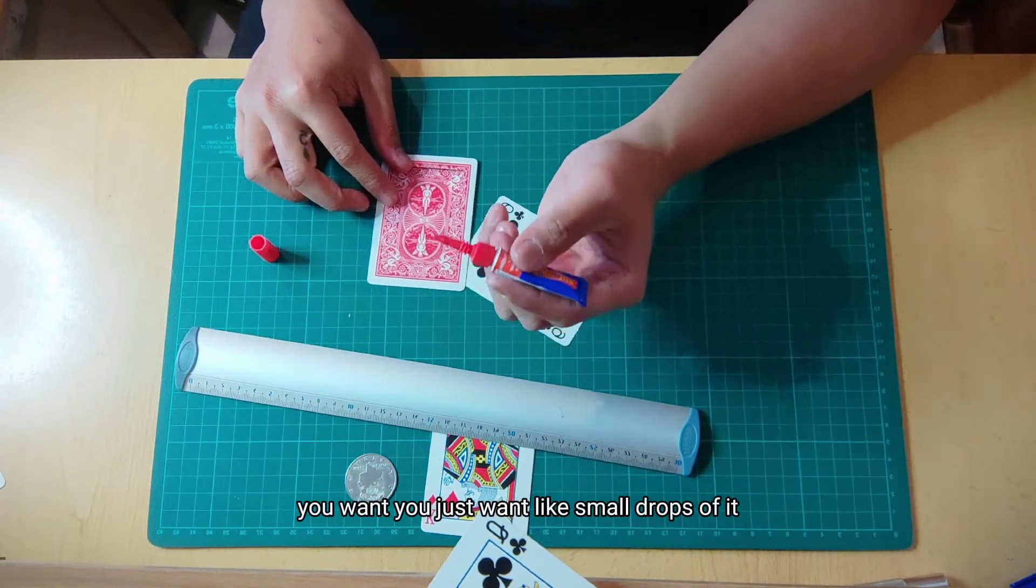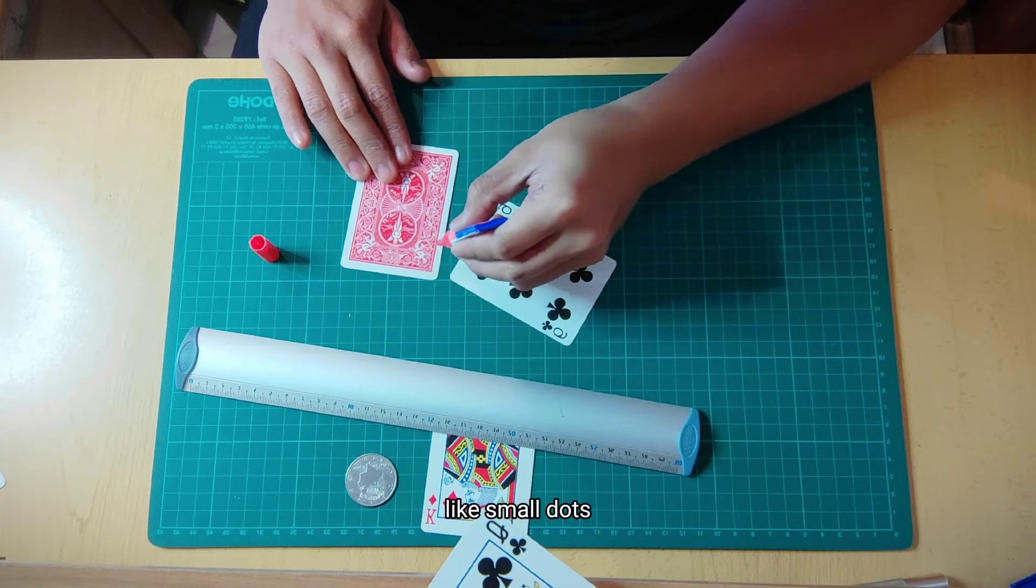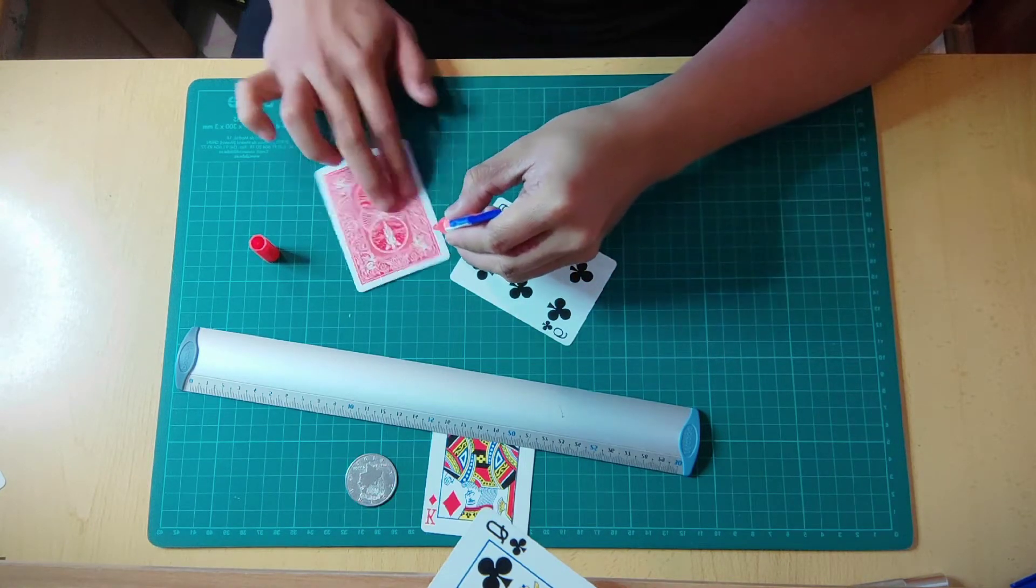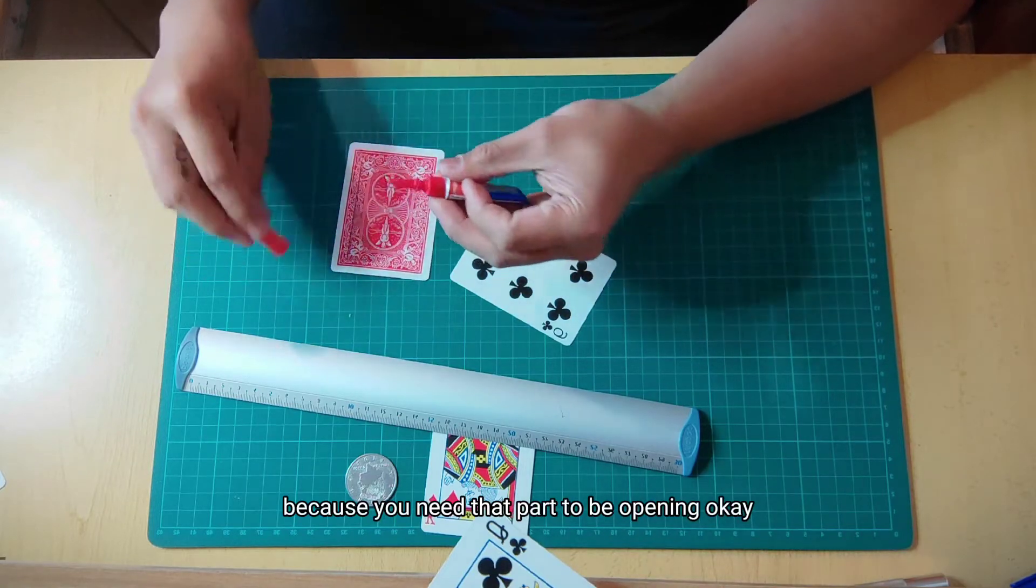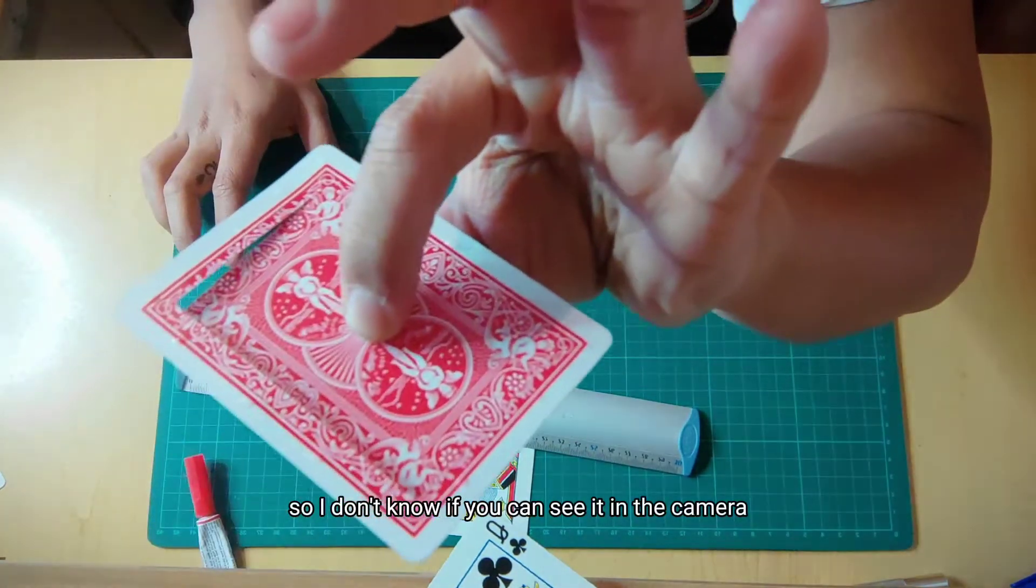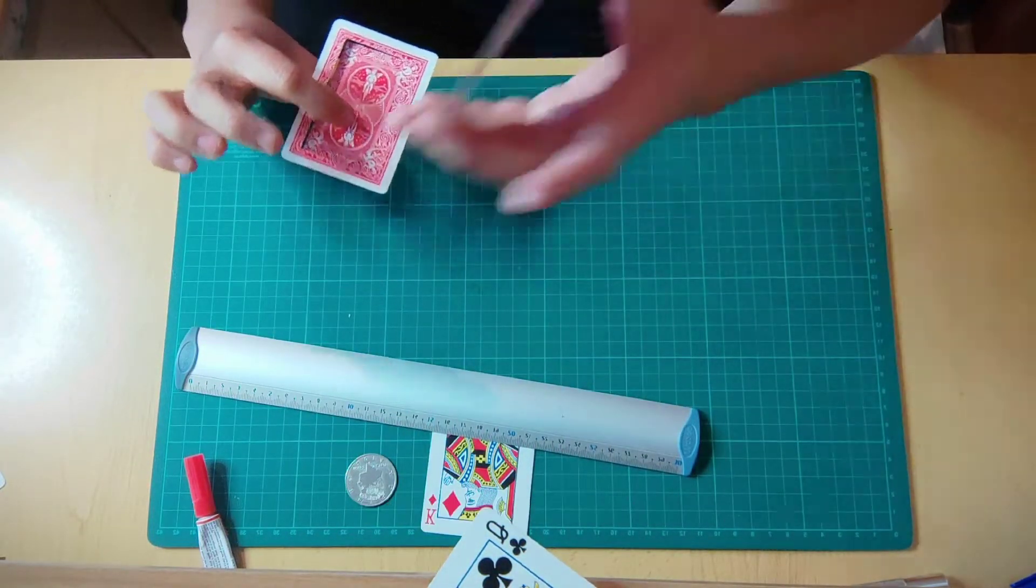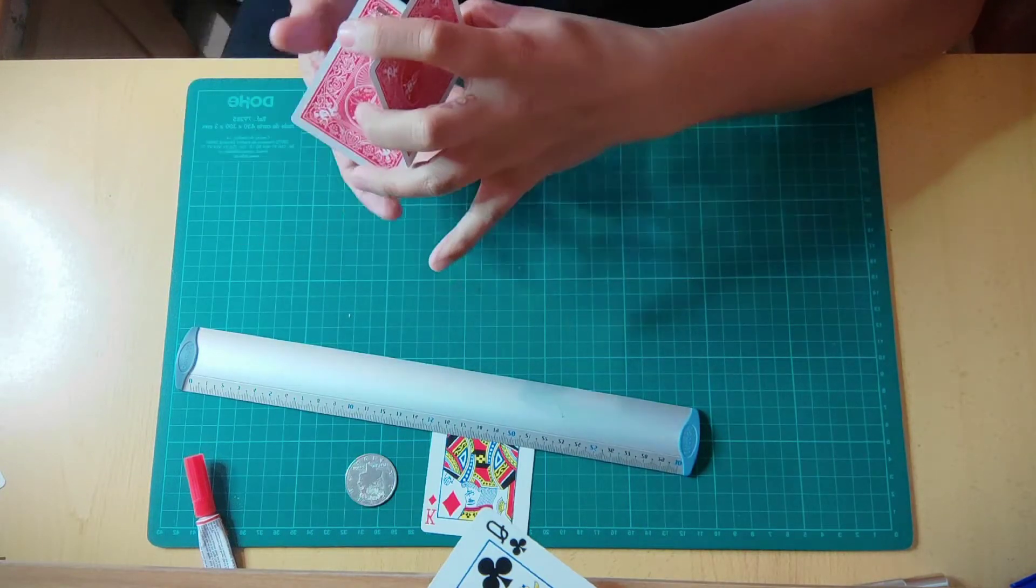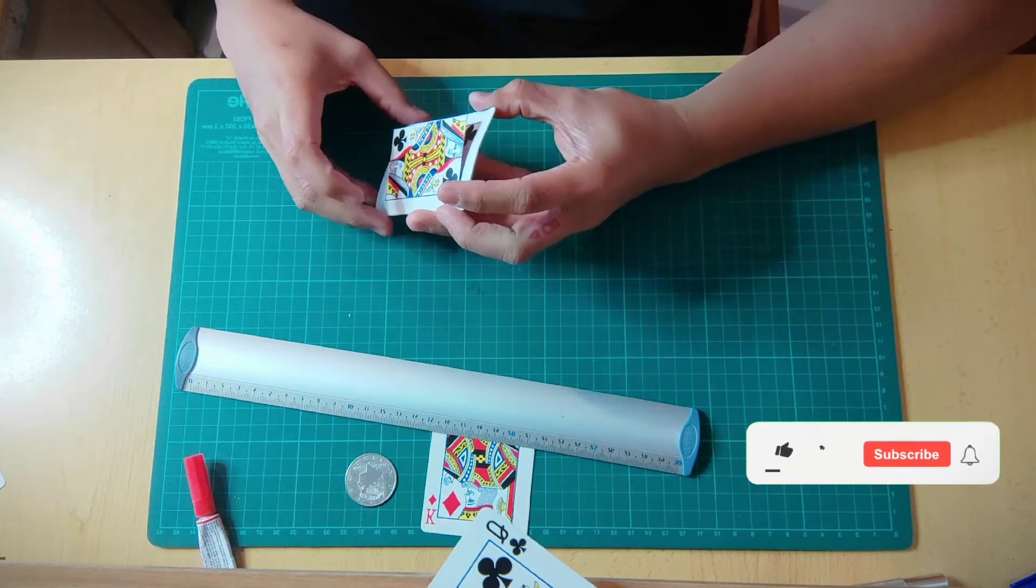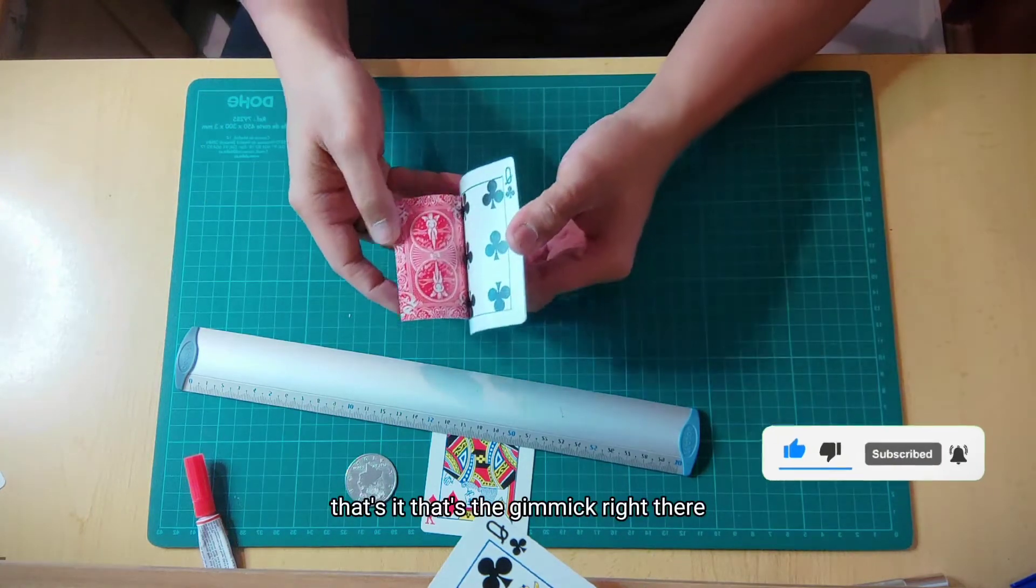You just want like small drops of it. I'll show you. Like small dots, all around the border of the card. I'll take the other one, very gently, and then just stick them together. Just like so. That's it. That's the gimmick right there.